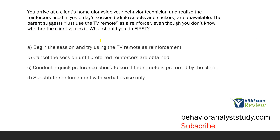You arrive at a client's home alongside your behavior technician and realize the reinforcers used in yesterday's session — snacks and stickers — are unavailable. Parents suggest using a TV remote as a reinforcer, even though you don't know whether the client values it. What should you do first? We want to involve parents, but we don't blindly jump into suggestions. Always, for new preferences and reinforcers, we've got to assess. We don't want to just use the remote — the client may not value it, and it may lead to more issues.